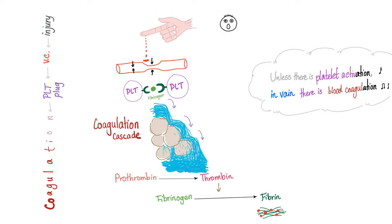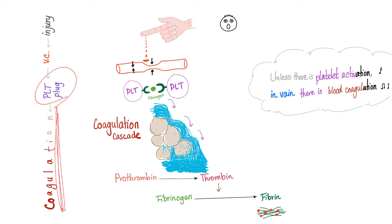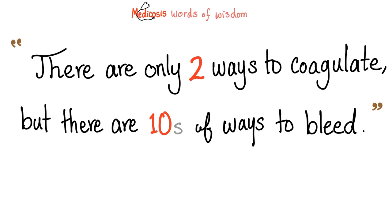Here is the whole story: you injure yourself, then vasoconstriction, then platelet plug also known as primary hemostasis, then the coagulation cascade — boom boom boom — strong, because of a cascade. Unless there is platelet activation, there is no blood coagulation. First we must have the platelet plug before we have coagulation. Without platelet activation, it is impossible to have blood coagulation. Take it to the bank.